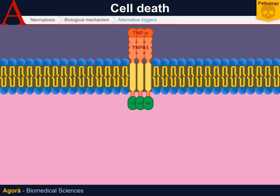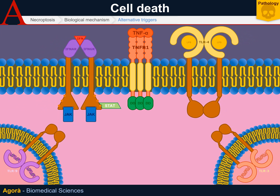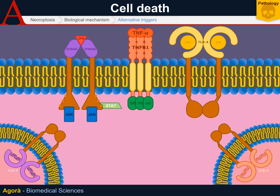What we have seen until now is only one of the possible pathways of necroptosis. This form of cell death may be triggered by different things as well, such as interferon alpha and interferon gamma receptors. Another possible activation involves toll-like receptors, which are receptors of innate immunity. Among these, toll-like receptor 4 can perceive bacterial lipopolysaccharide, and toll-like receptors 3 and 9 are endosomal receptors. Toll-like receptor 3 can detect the presence of dsRNA — double-stranded RNA — which is only viral.